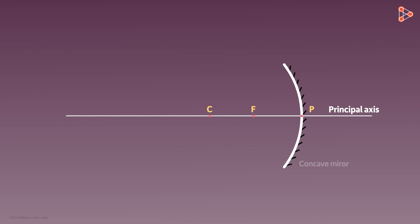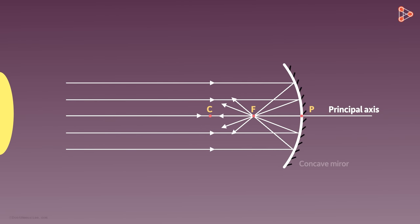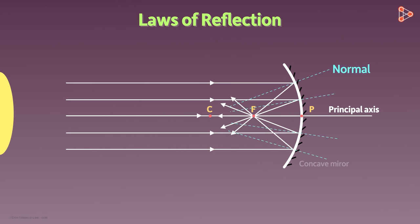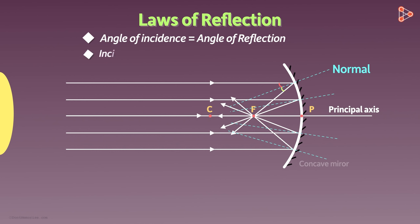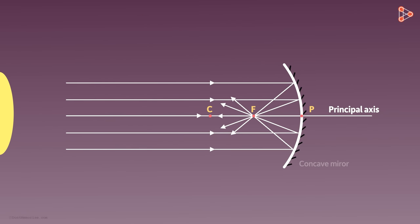Our object, the sun, is present at infinity and emitting parallel rays of light. All rays of light, after being incident on the mirror, follow the laws of reflection — angle of incidence equals angle of reflection, and all three lie in the same plane. After reflection, they are all meeting and converging at the principal focus.